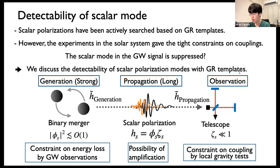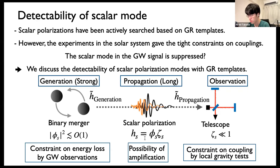GR templates means luminal propagations and without frequency-dependent wave deformations. Here we take into account the generation process, propagation process, and observation or detection process. At the stage of generation, we consider the constraint on the energy loss by gravitational wave observations. At the stage of propagation, we consider the possibility of amplification of some polarizations during the cosmological long-distance propagation. And at the stage of observation, we consider the constraint on the coupling by local gravity tests.